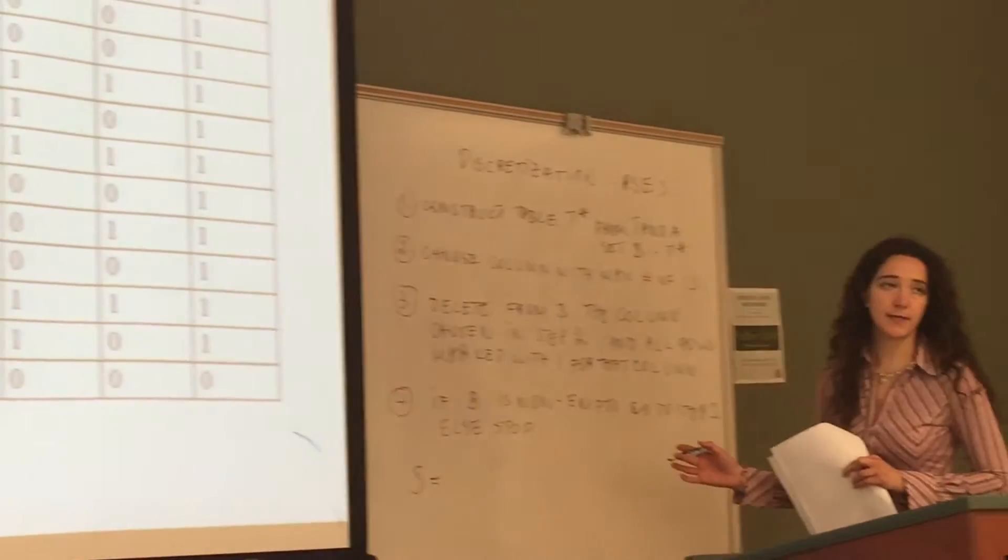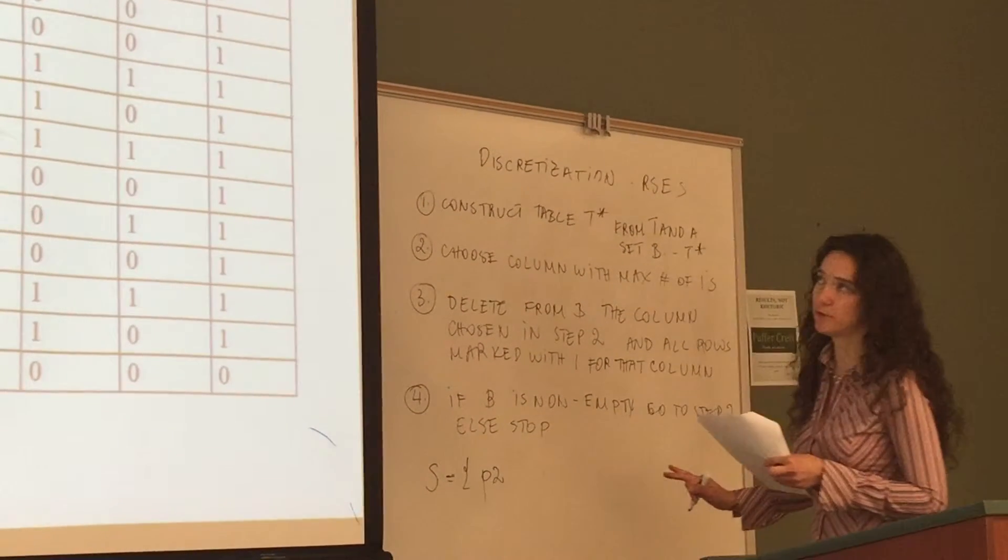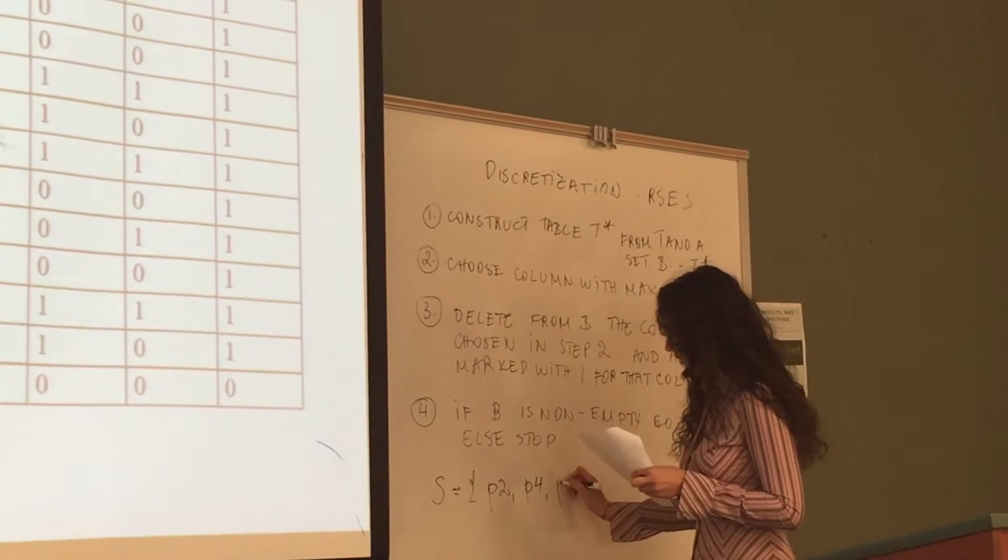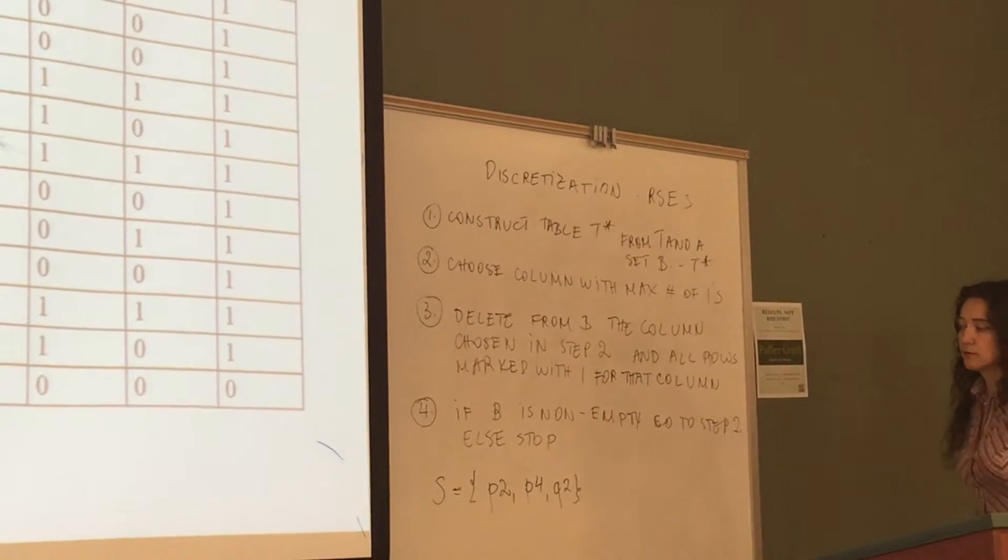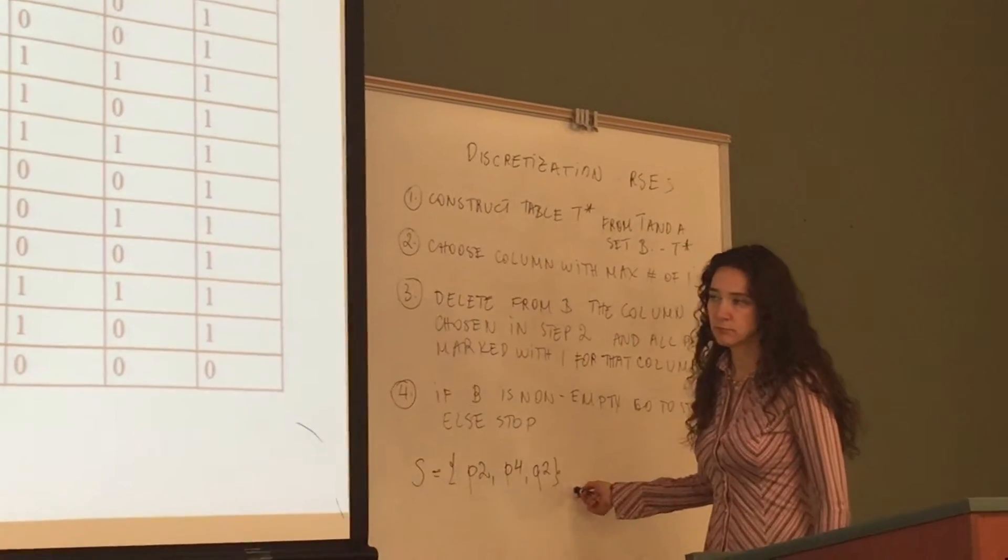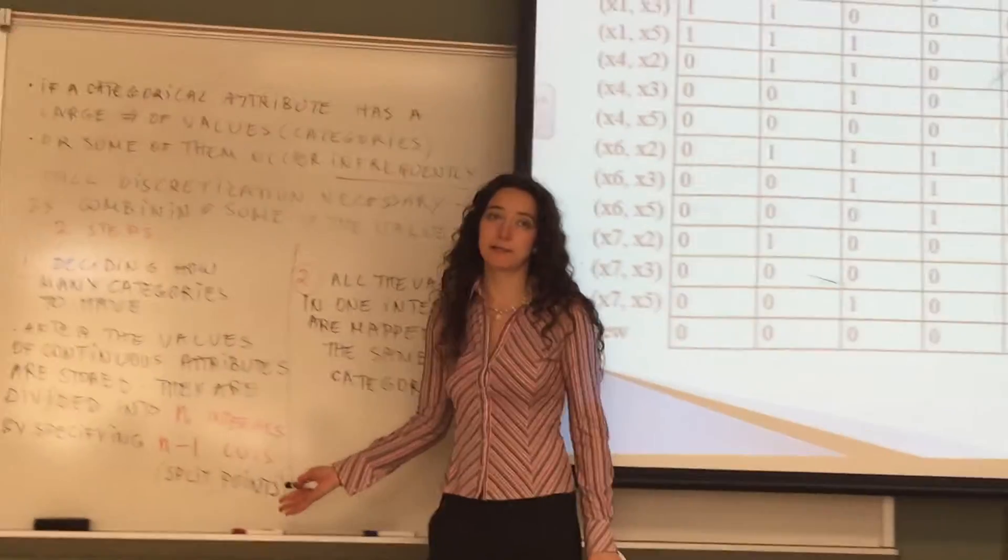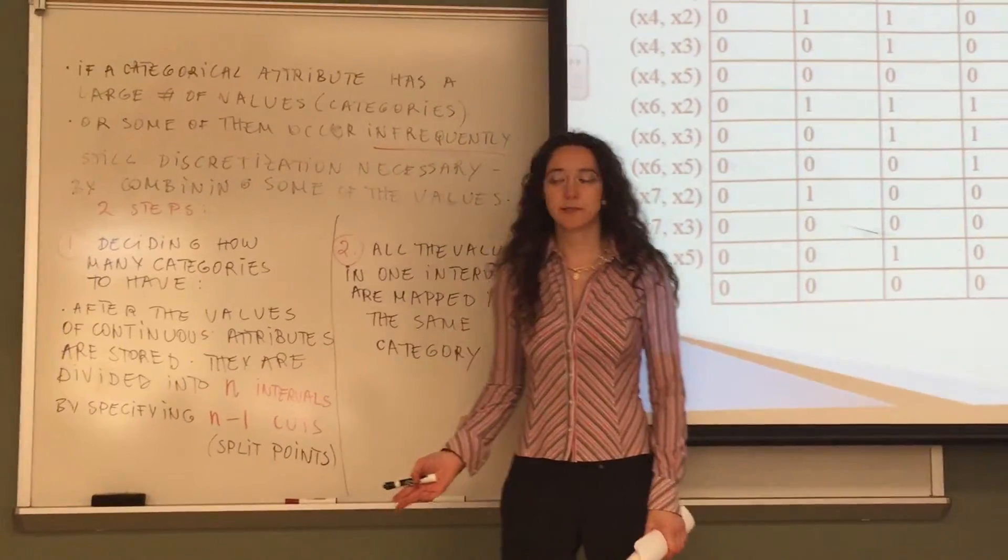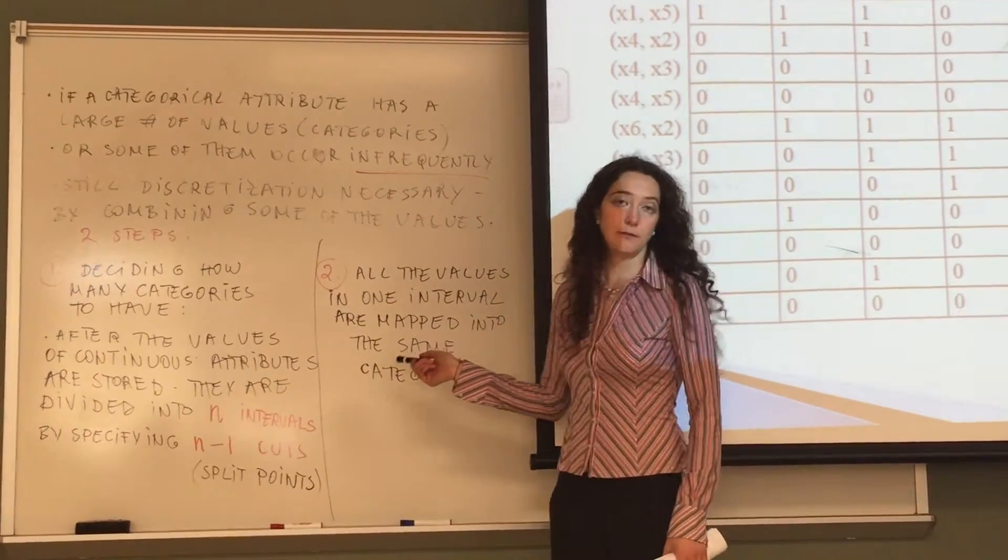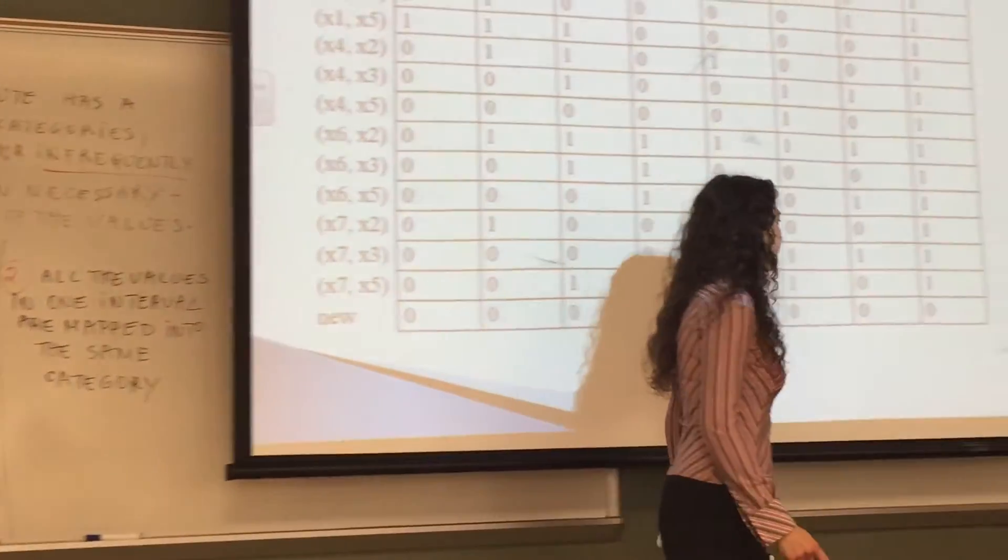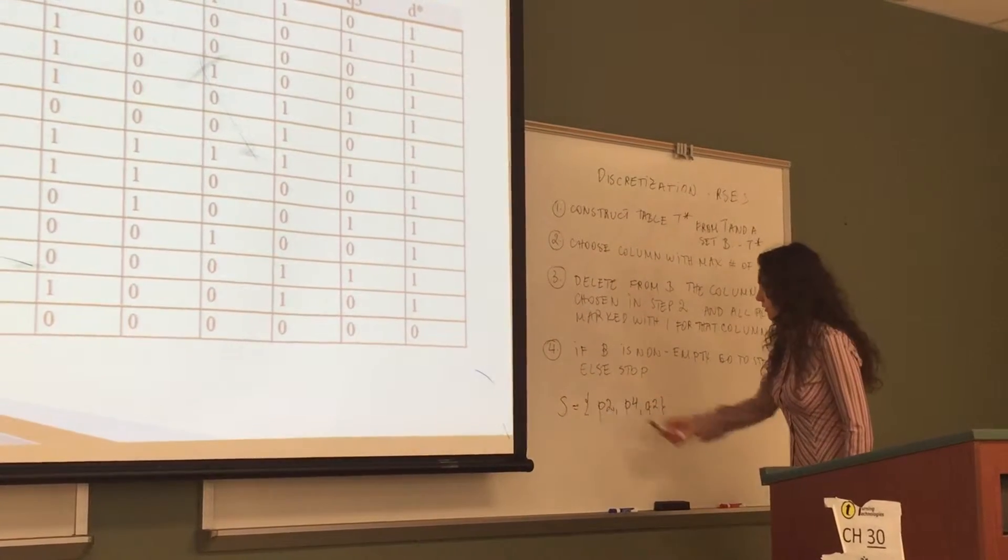If we do this from table we will end up with 3 columns left which will be p2, p4 and q2, and these are considered the optimal cuts for deciding the number of intervals that we need to have for that particular data set. According to this algorithm in RICS, we will end up using 3 cuts and so we are going to create 4 intervals.